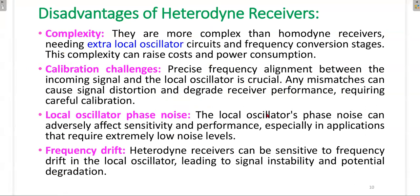The disadvantages of the Heterodyne Receiver are: high complexity due to two-stage conversion requiring at least two local oscillators; calibration challenges requiring precise local oscillator frequency without any carrier or frequency offset; local oscillator phase noise - if the local oscillator creates different phases at different times, it disturbs the demodulated signal; and frequency drift - even small frequency drift at the local oscillator creates significant interference or distortion in the recovered message signal.